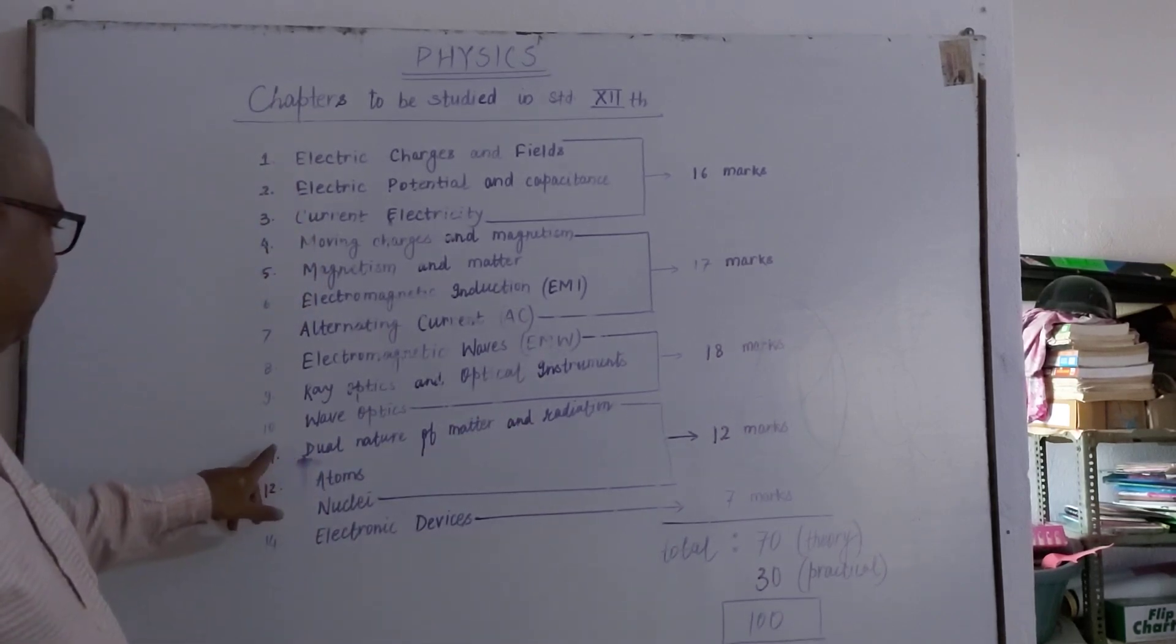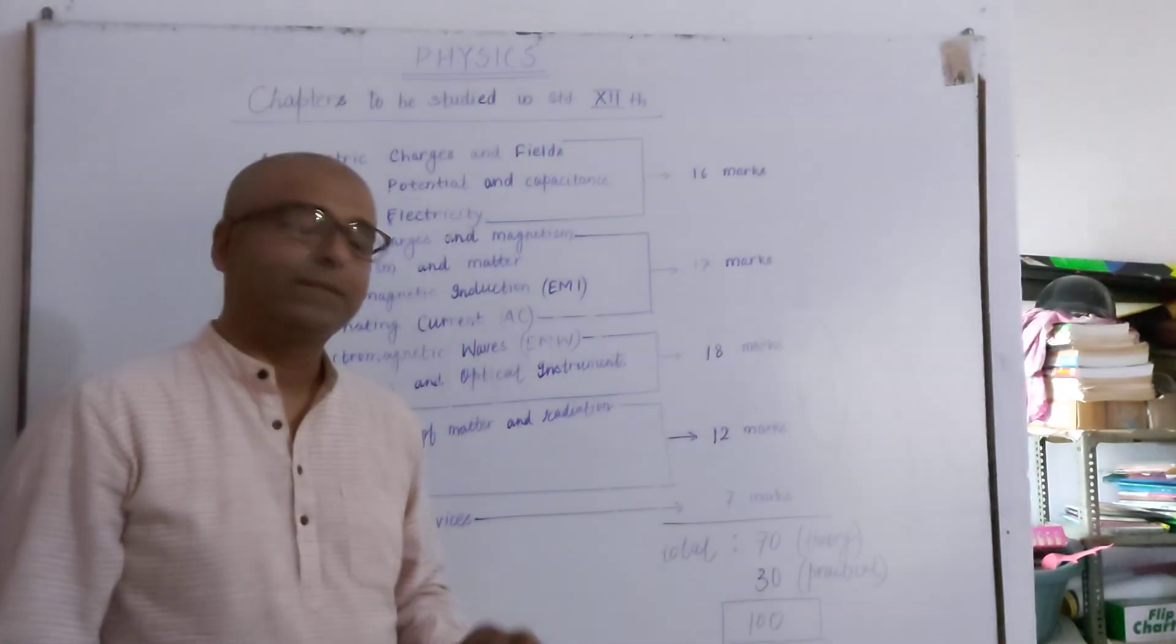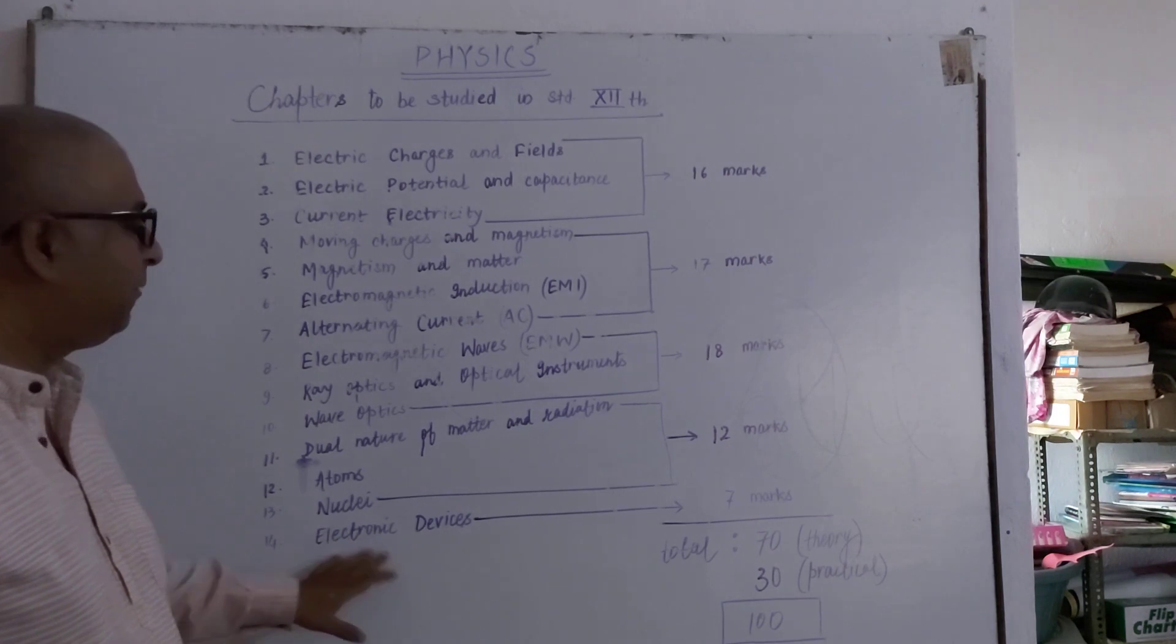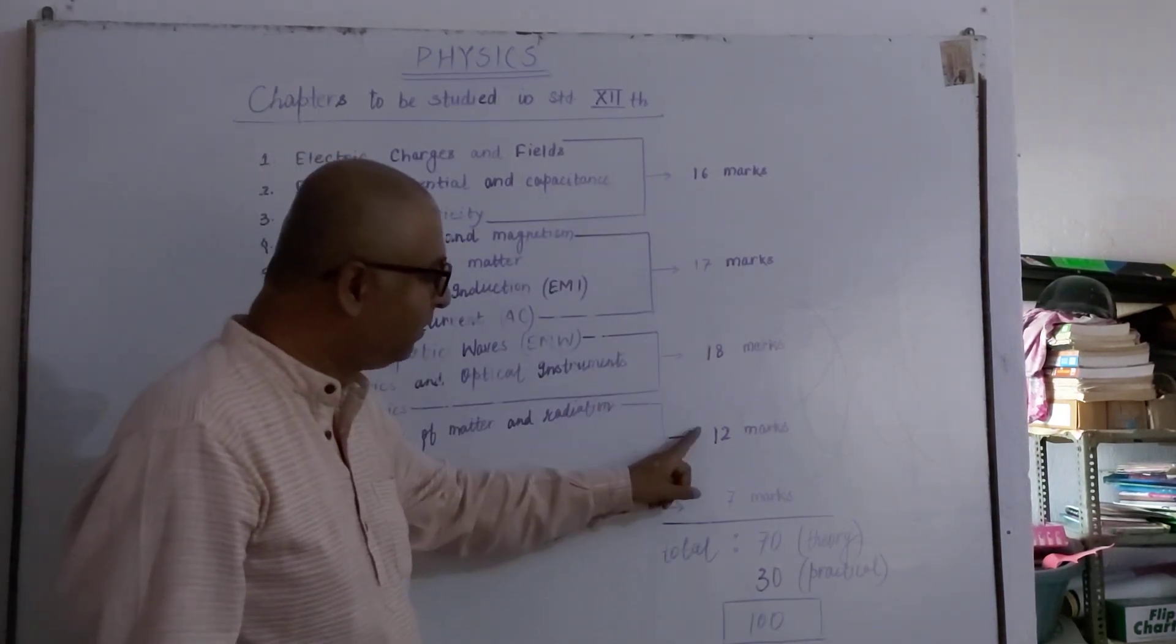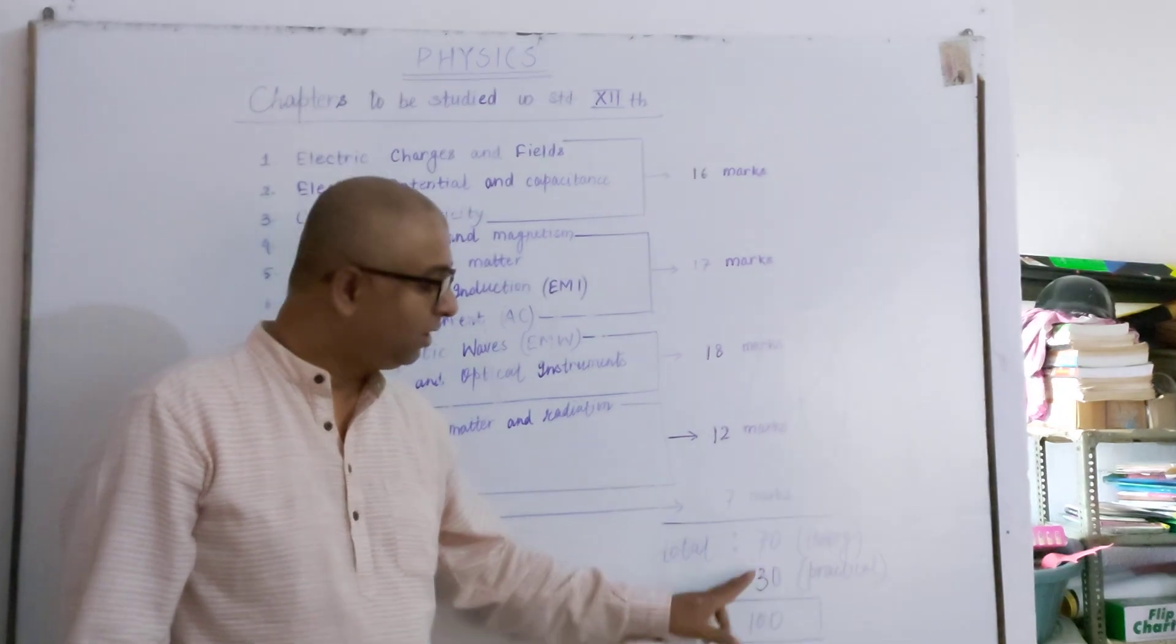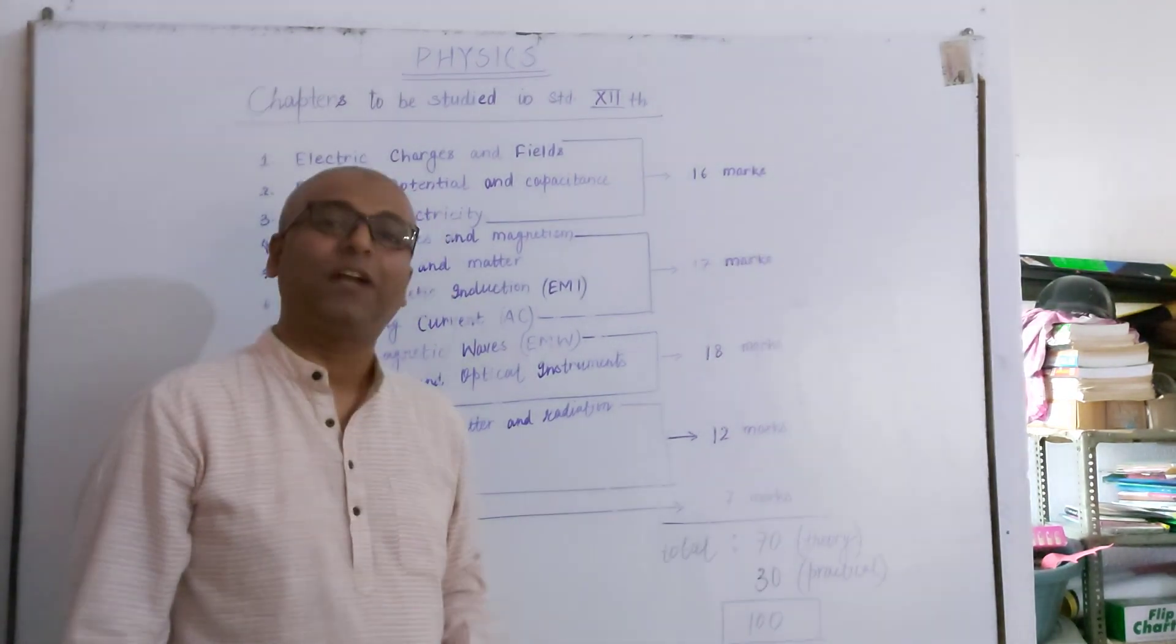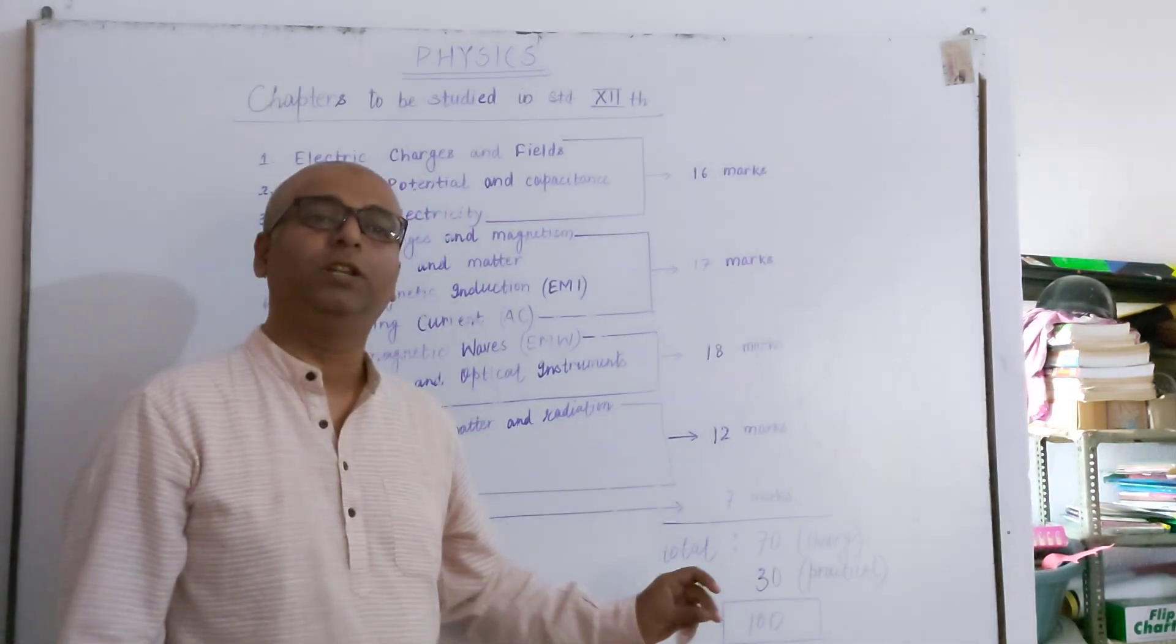From Chapter 11, 12 and 13: 12 marks. And Chapter 14 is of 7 marks. If you add all these marks, you will get 70 marks. So, your theory paper of board examination will be of 70 marks. 30 marks will be for practical examination. And when you add those two, you will get total 100.